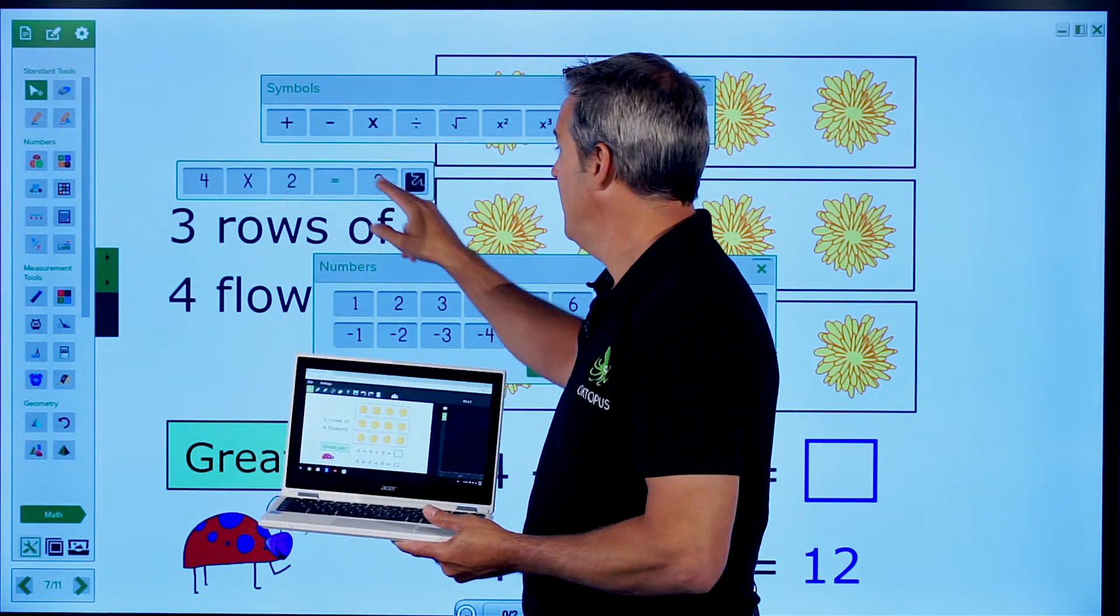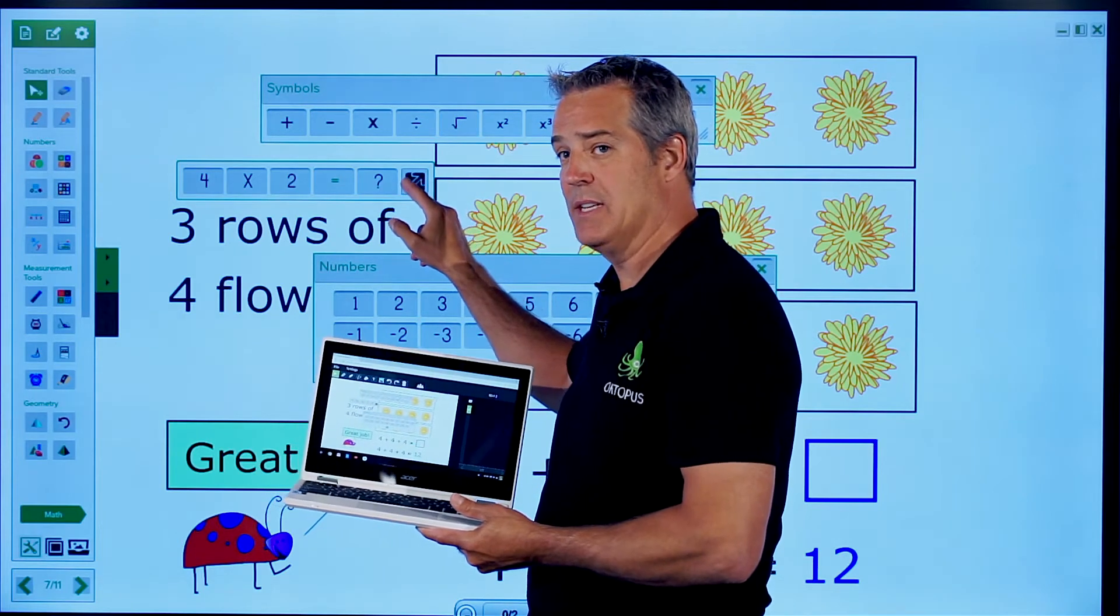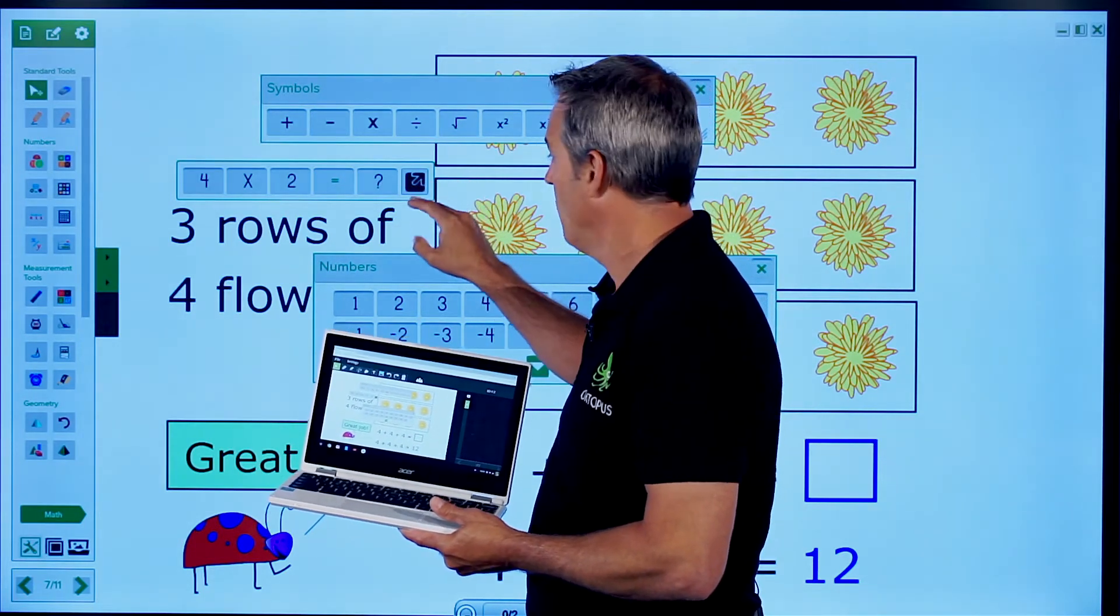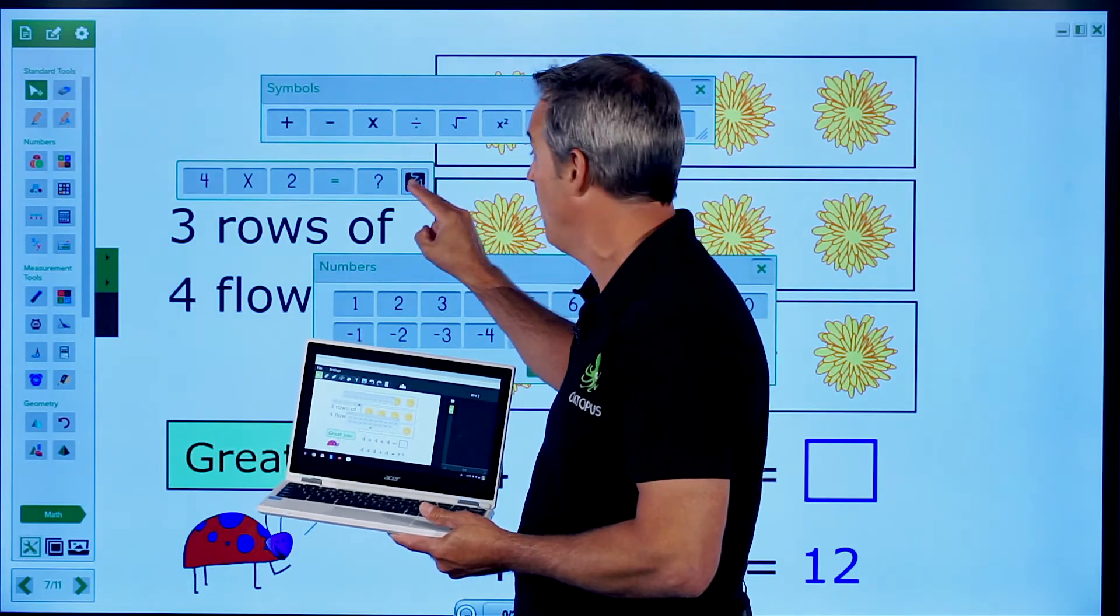And we're going to build our own number sentence. And once I put an equal sign on that, I get this arrow at the end of it.